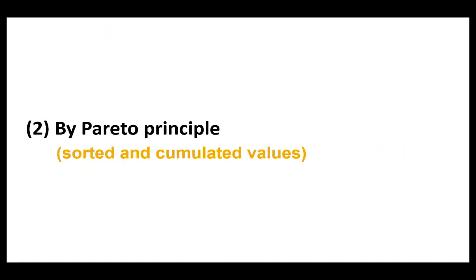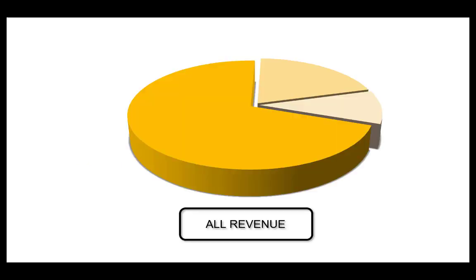The second method works on the same principle, but it calculates with actual values instead of percentages. In other words, it lets you identify the products that together contribute with the largest and smallest amounts to the overall revenue. For example, segment A should contain the items with the highest numbers that together bring in $2,500 out of an overall revenue of about $5,000. Segment B should contain those bringing in $1,500, and segment C should contain those that bring in the remaining amount.